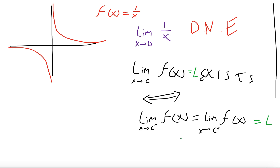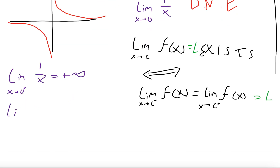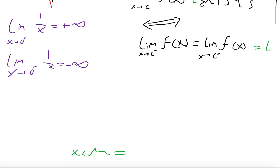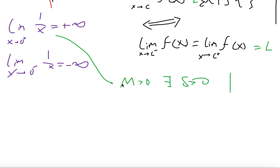So maybe we can prove the one-sided limits are not equal, first by splitting them into two parts. We can say the limit as x goes to zero from the positive of 1/x equals positive infinity, and the limit as x goes to zero from the negative of 1/x equals negative infinity. If we prove these statements true, then we can say these are not equal and therefore the limit does not exist. We'll use M-delta. For a given M greater than zero, there exists delta greater than zero such that — for the one-sided limit — x is less than delta implies that 1/x is greater than M.